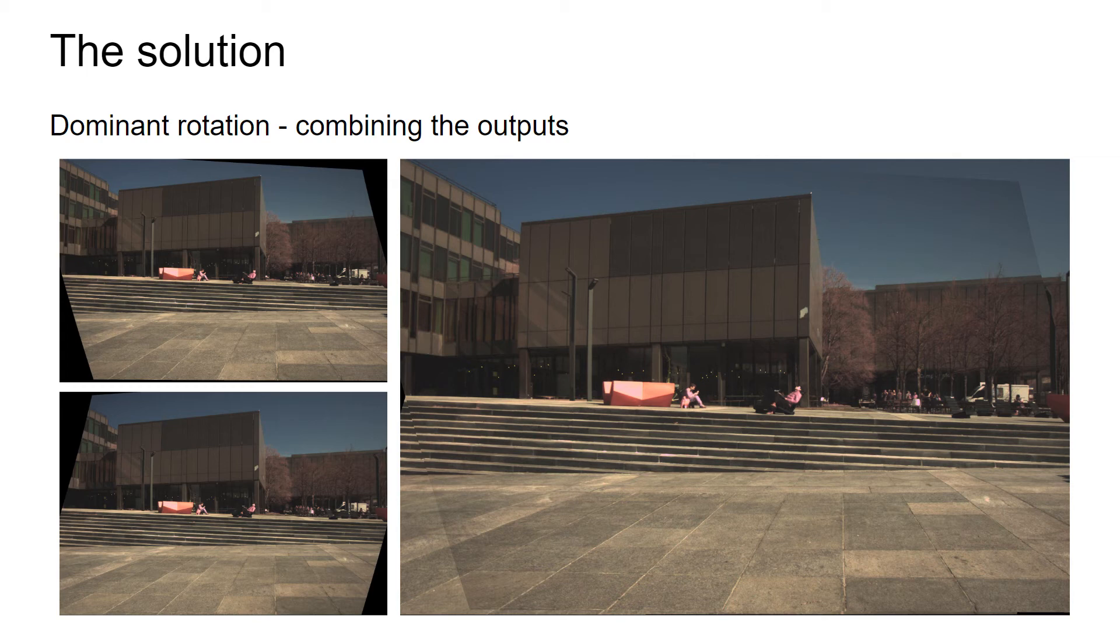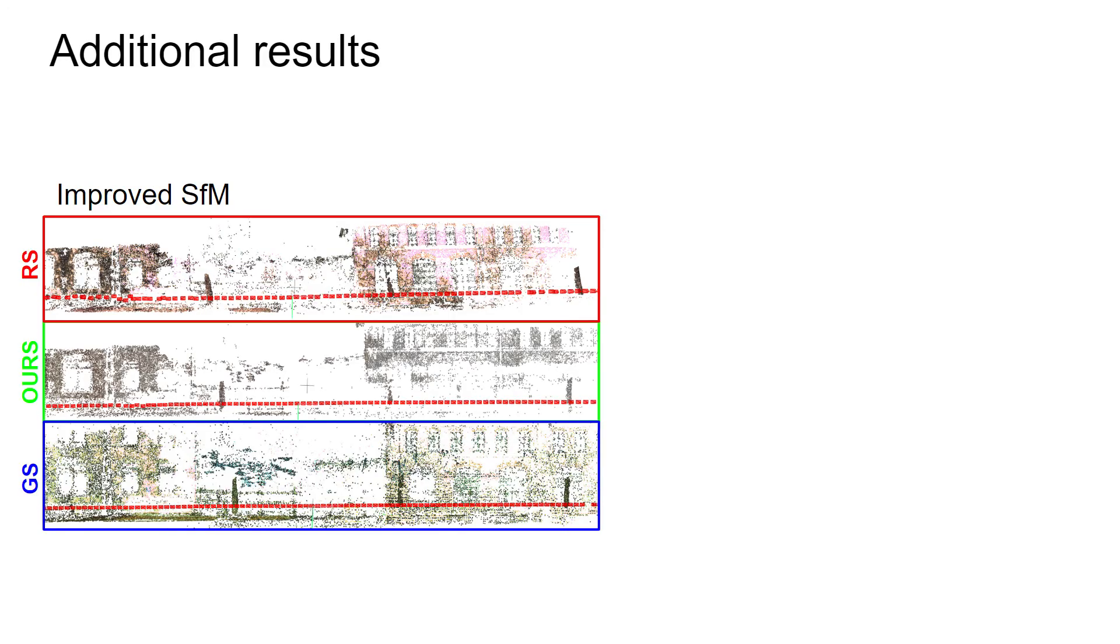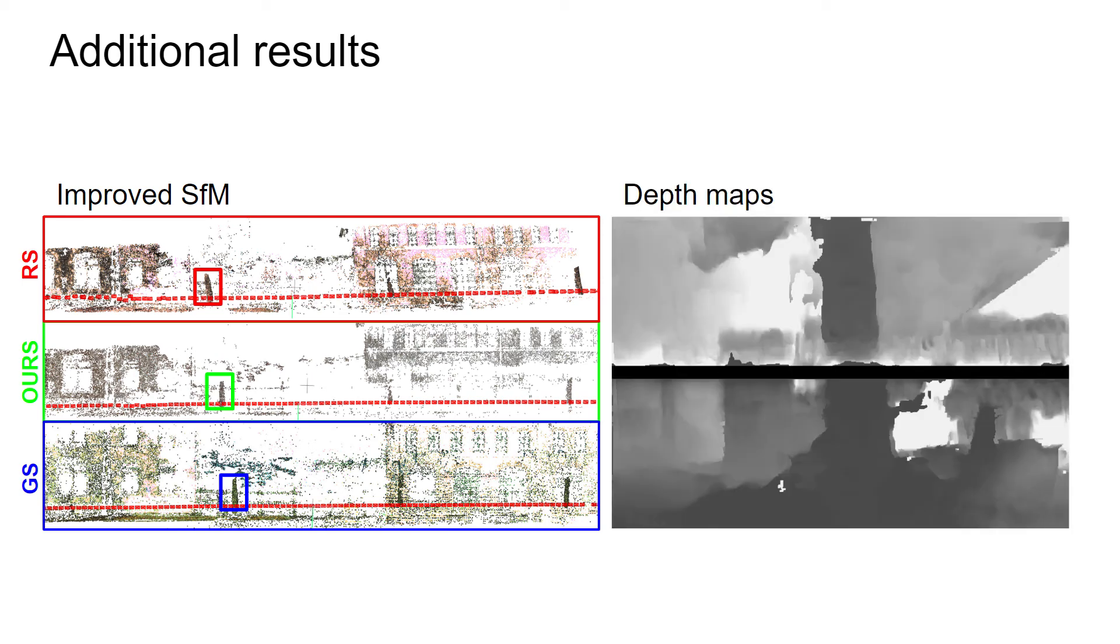It is worth mentioning some other results we can get using our methods. One of them is using the undistorted sparse correspondences in Structure from Motion pipeline, where they clearly provide much better reconstruction than those coming from the rolling shutter images. This is especially apparent on the nearby objects.